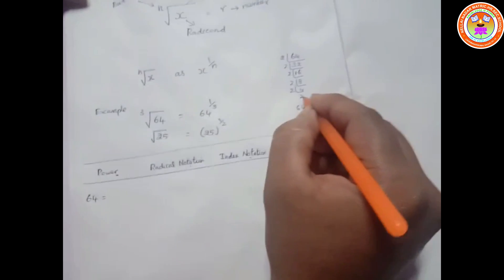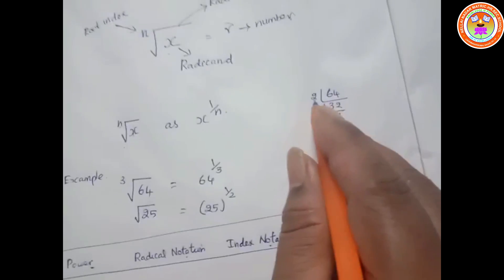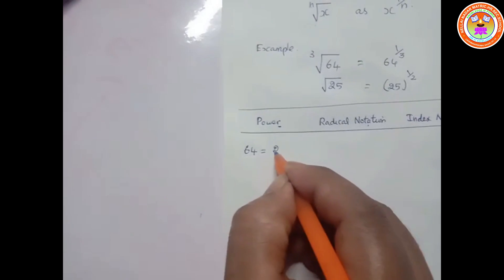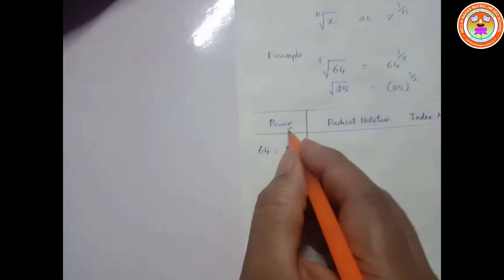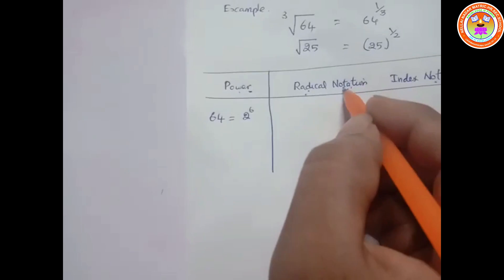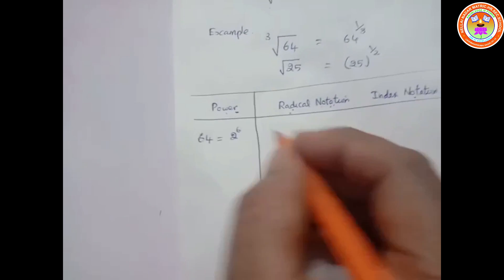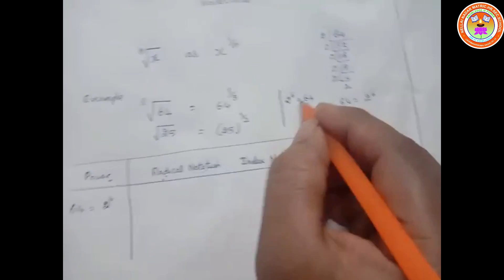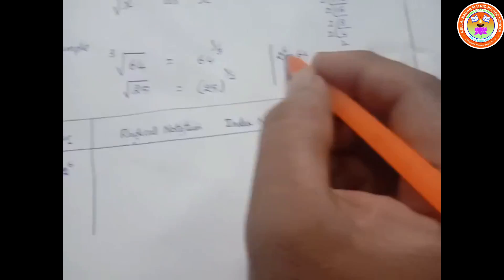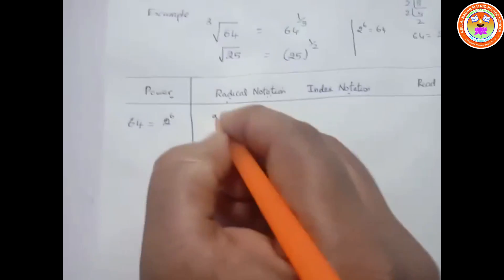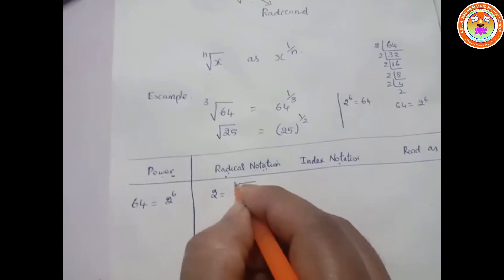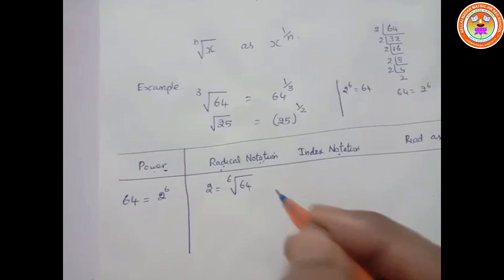64 can be written as 2 to the power of 6. This is the power notation. Now for radical notation: since 2 to the power of 6 equals 64, we can write 2 equals the 6th root of 64.